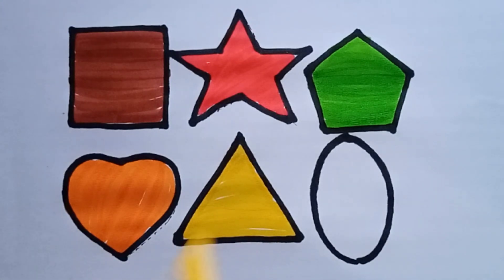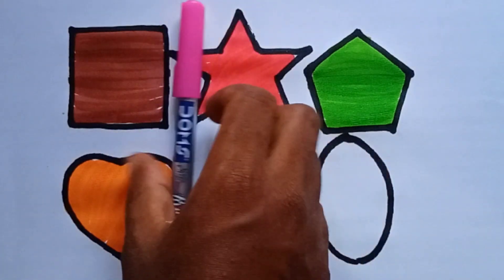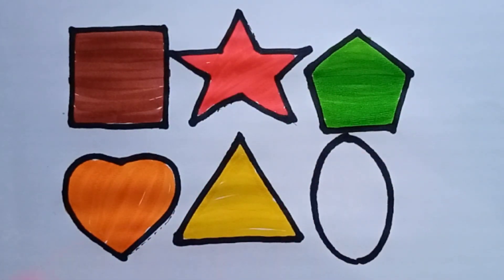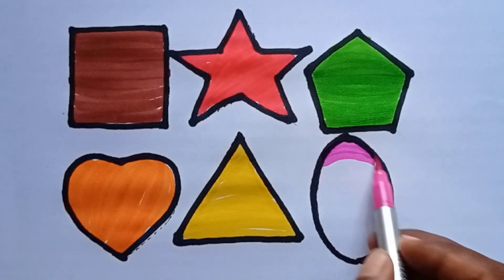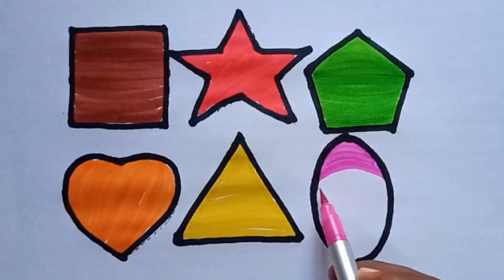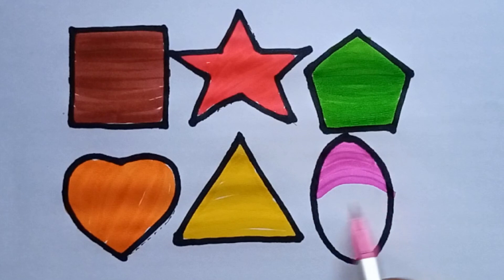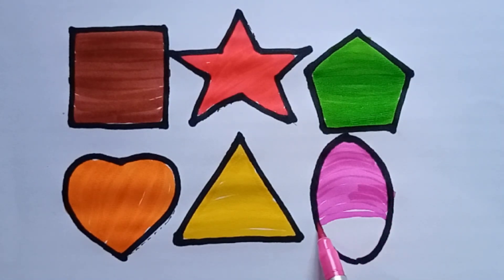Triangle. This is triangle. And next one, pink color. I am coloring ellipse. This is ellipse. Thank you.